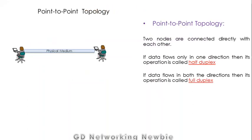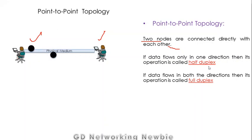The very first topology is known as point-to-point topology. This is the simplest of the topologies, where two nodes are connected directly by using some physical medium. If data flows only in one direction, this is known as half duplex operation, and if data flows in both directions, this is known as full duplex.